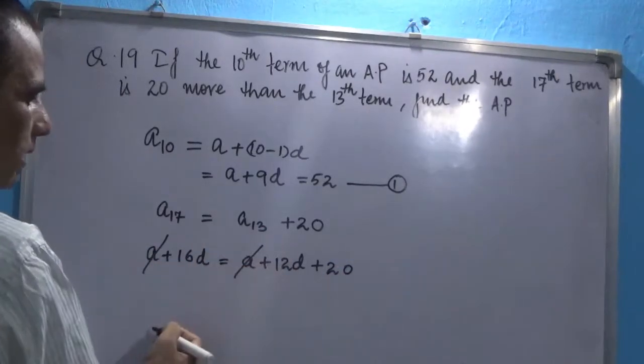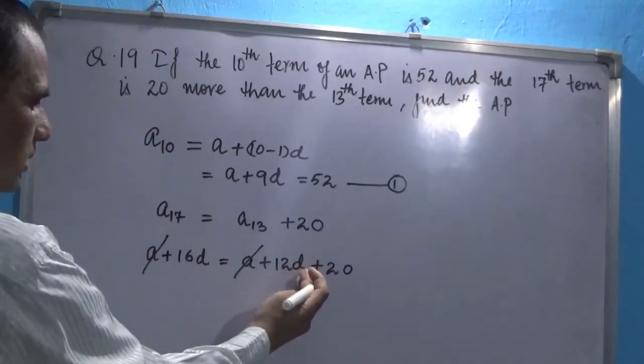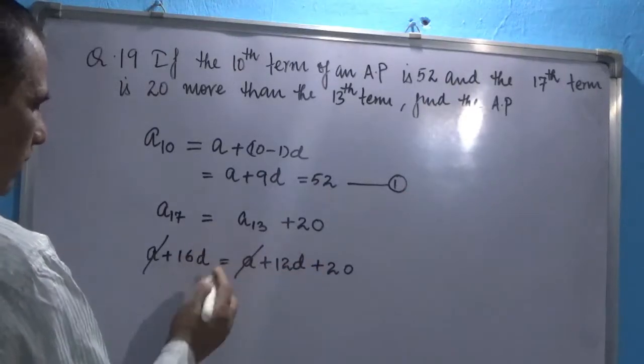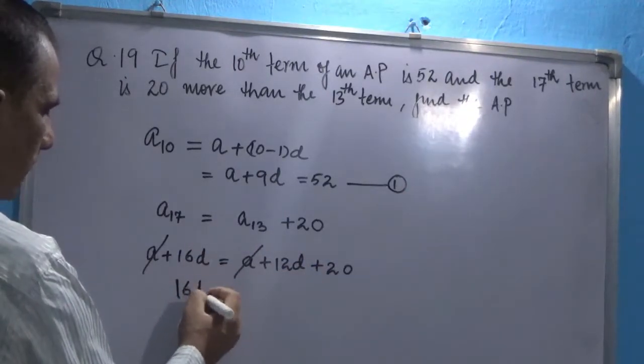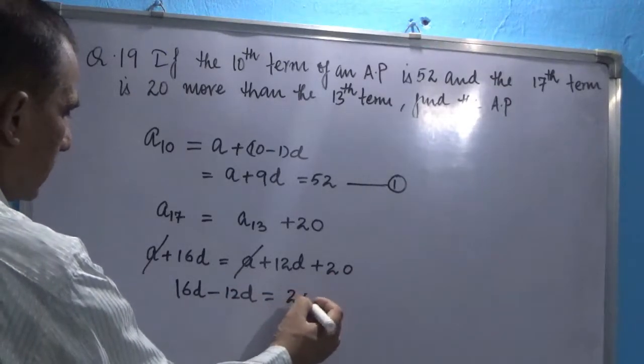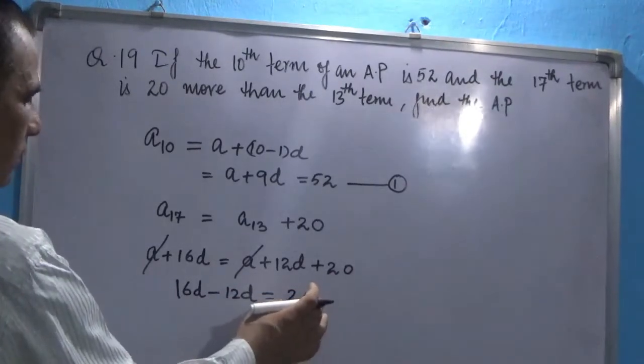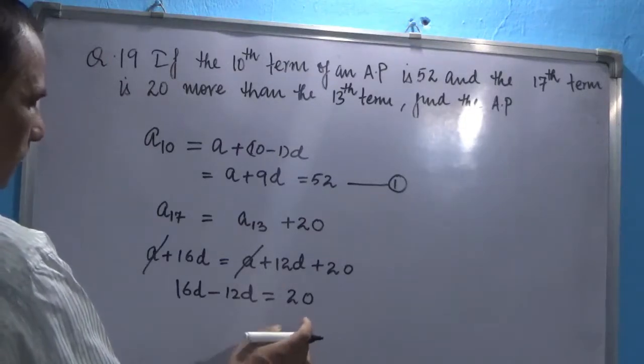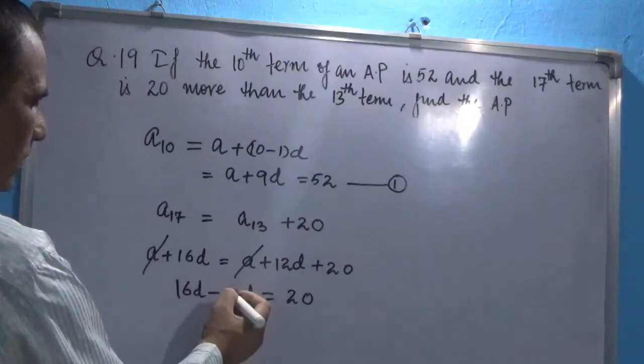Now this A will get cancelled. We can take this 12D to the left hand side, the sign will change, it becomes minus 12D, and on the right hand side we will have 20. So 16 minus 12 will give us 4D equals 20.